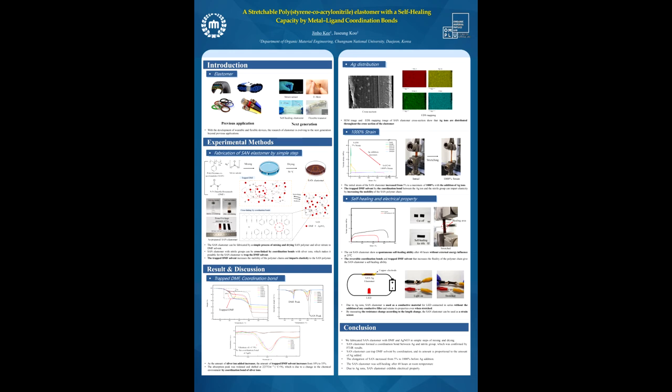In conclusion, we fabricated SAN elastomer with DMF and silver nitrate in simple steps of mixing and drying. SAN elastomer forms coordination bonds between silver ion and nitrile group which was confirmed by FTIR results. The SAN elastomer can trap DMF solvent by coordination bonds and its amount is proportional to the amount of silver added. The elongation of SAN increased from 5% to 1000% after silver addition.